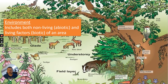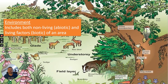Environment. The environment includes both the non-living abiotic and living biotic factors of an area. The biotic is going to be the community of individual species, and the non-living abiotic factors are things such as soil moisture, wind speed, and temperature — all the things that might affect the animals and plants that live in that area.